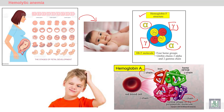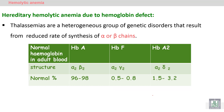Instead of gamma chains, hemoglobin A uses the beta gene, which is expressed after six months. In adults, we have three types of hemoglobin: hemoglobin A, hemoglobin F, and hemoglobin A2. The majority is hemoglobin A, comprising 96 to 98 percent of total hemoglobin, with small amounts of hemoglobin F and hemoglobin A2.